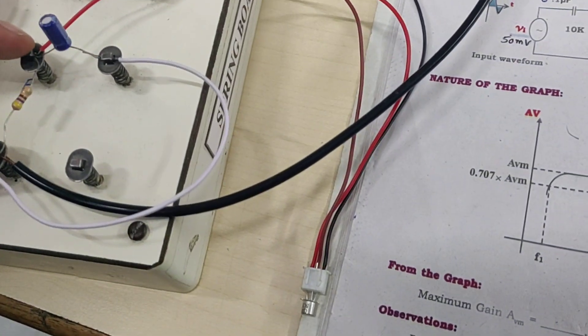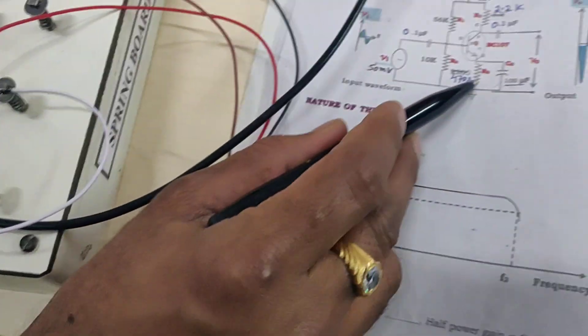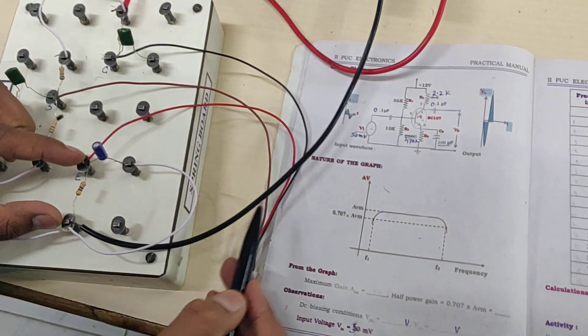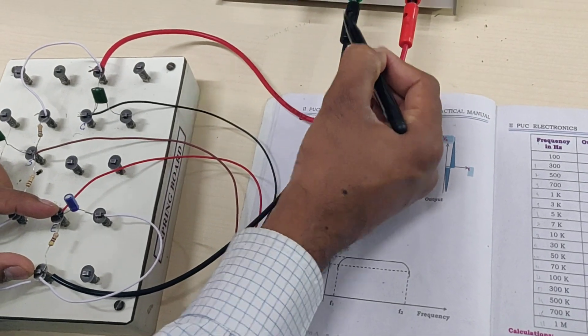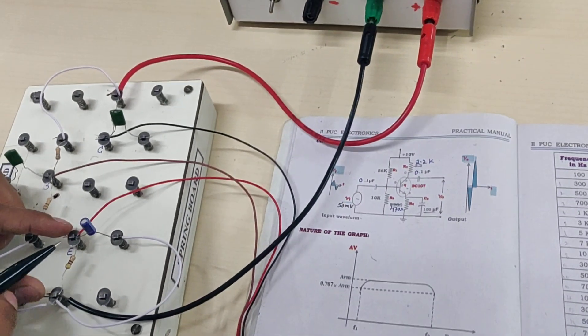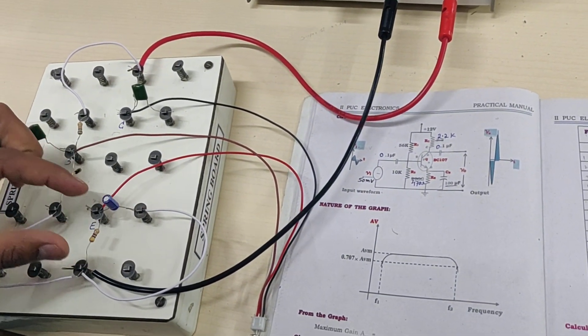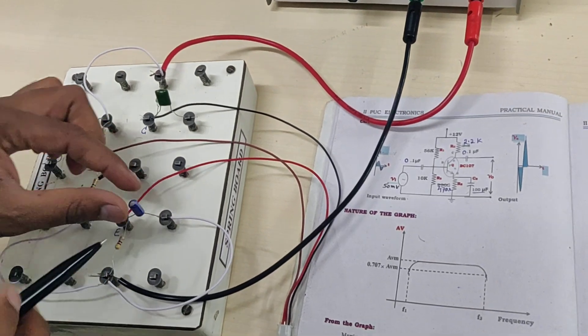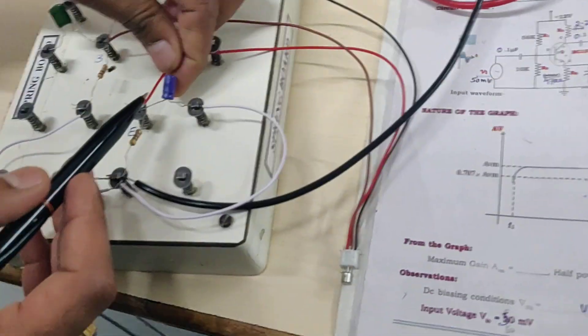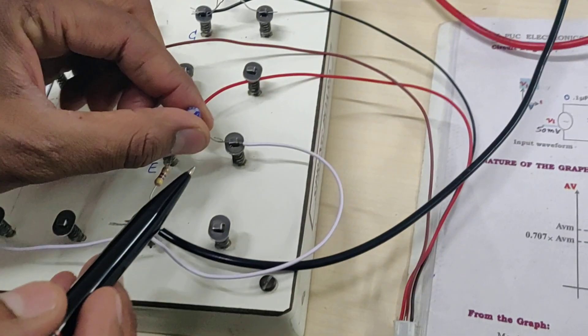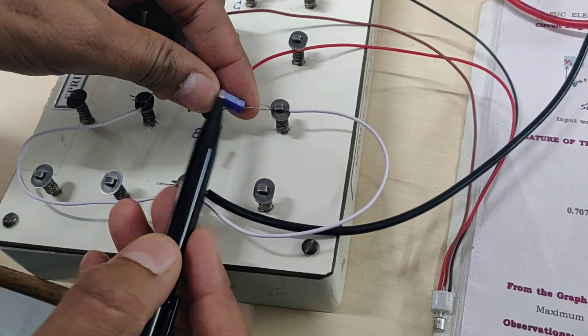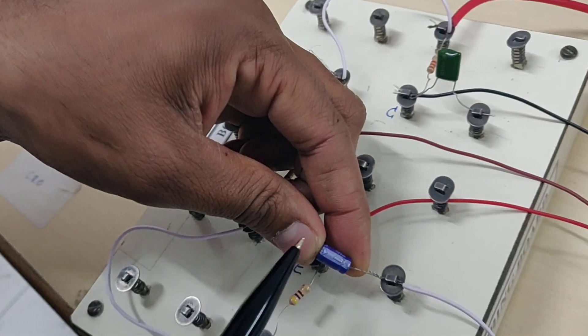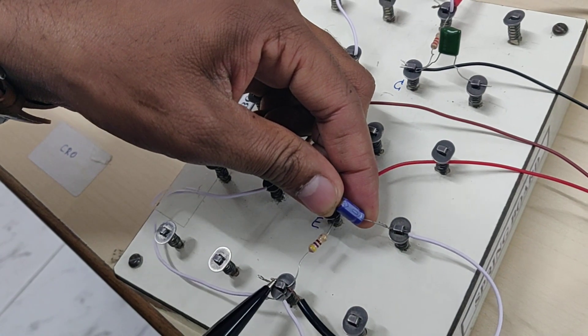This capacitor is connected across the emitter resistor. The other end of the emitter resistor should go to ground potential, which is connected to the negative of the 12V supply. We are connecting the capacitor across the resistor, with positive to the emitter side and negative to the ground potential.